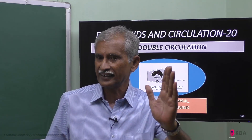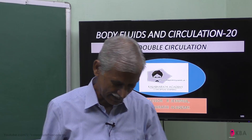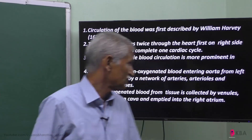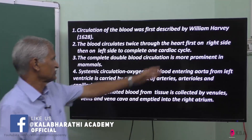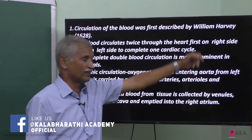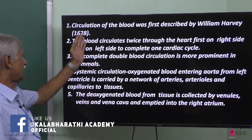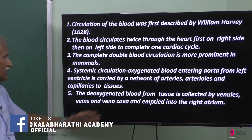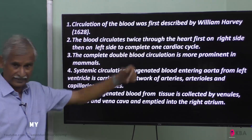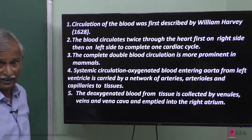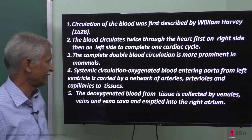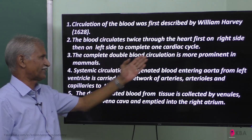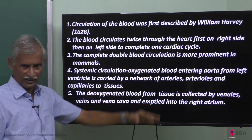The right side of the heart works separately, and the left side works separately — that we will see. Circulation of the blood was first discovered by William Harvey. The blood circulates twice through the heart — first on the right side, then on the left side — to complete one cardiac cycle.